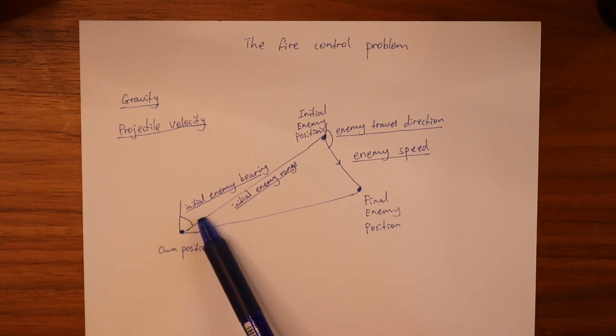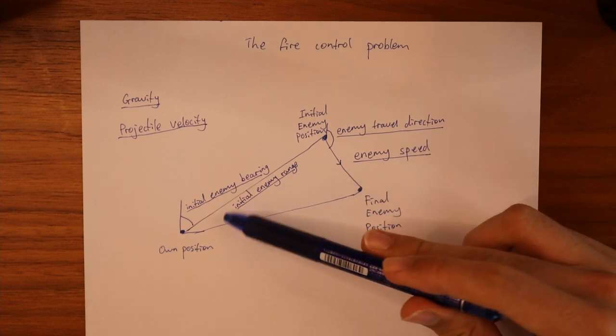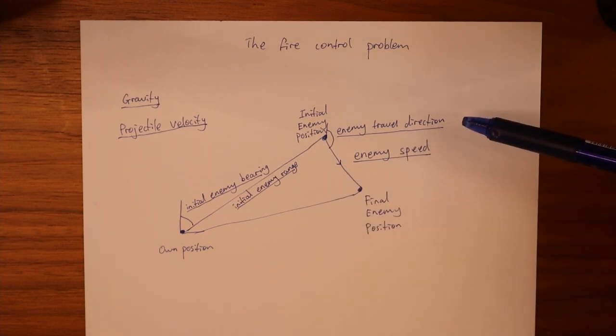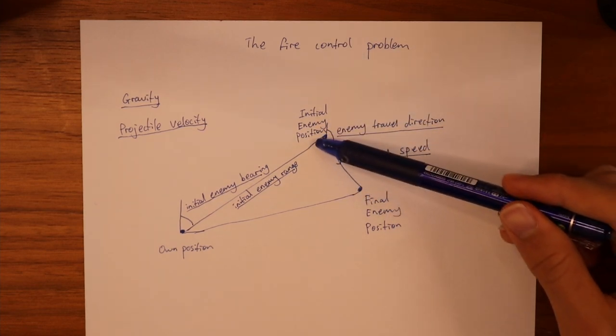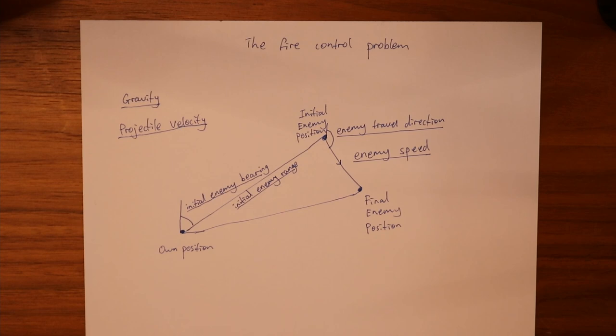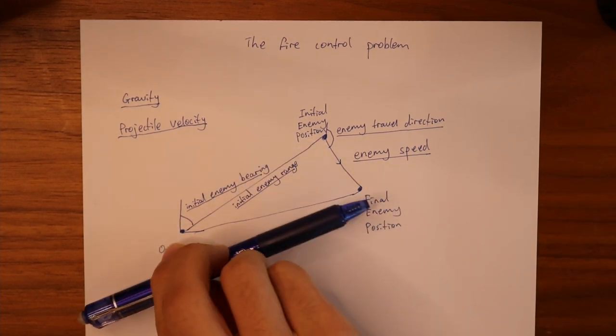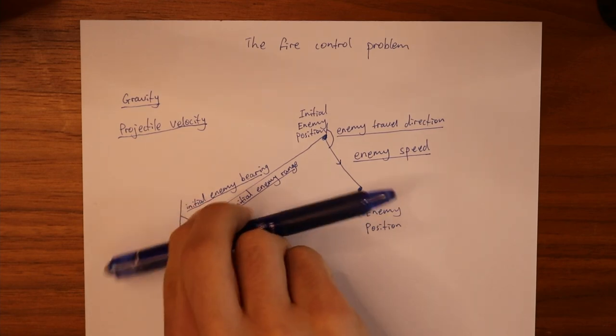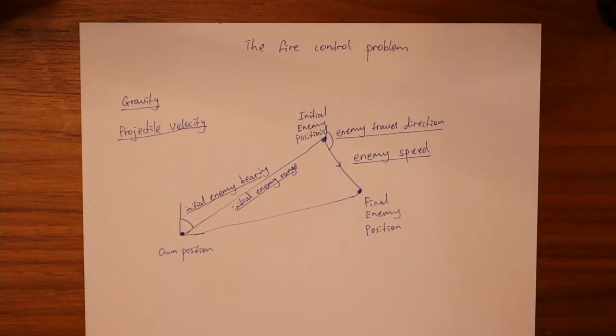I say they're the initial ones since by the time that the projectile impacts these two values would have changed. The two other variables are the enemy travel direction as well as the enemy traveling speed. With these six values you're able to calculate the direction to aim the gun as well as how high up to aim the gun in order to achieve this range, and then you would have solved the fire control problem, which is exactly what this turret aimer does in the automatic mode.